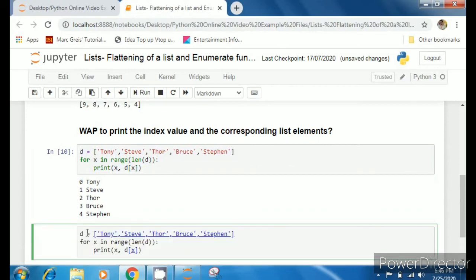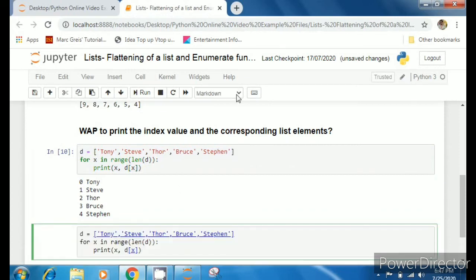Enumerate is a method, is a function which gives the index as well as element value. Let's see how to use this. Enumerate is a keyword, so I'll write enumerate, I'll pass the list name here also.